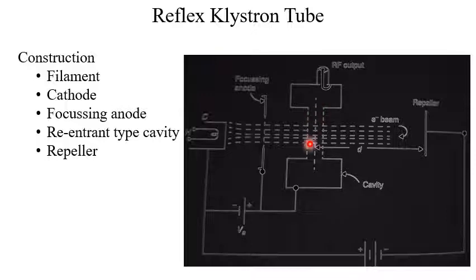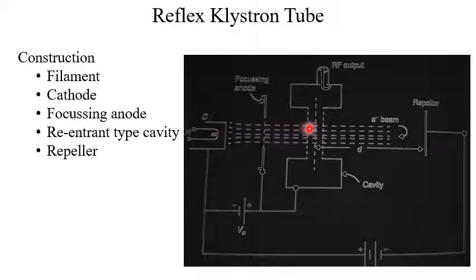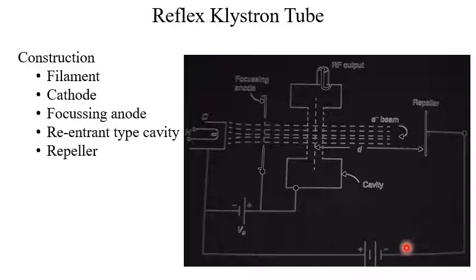The cavity is shaped like a toroid — at the center part we have the wire mesh and at the rim part we have the metallic enclosure. In the metallic enclosure there is an output port. It does not require an input port because it is an oscillator. There is another electrode called the repeller, whose function is to repel the electron beam. Electrons emitted from the cathode pass through the wire mesh, travel toward the repeller, and the repeller repels them back to the cavity. The repeller is kept at negative potential and the anode at positive potential.